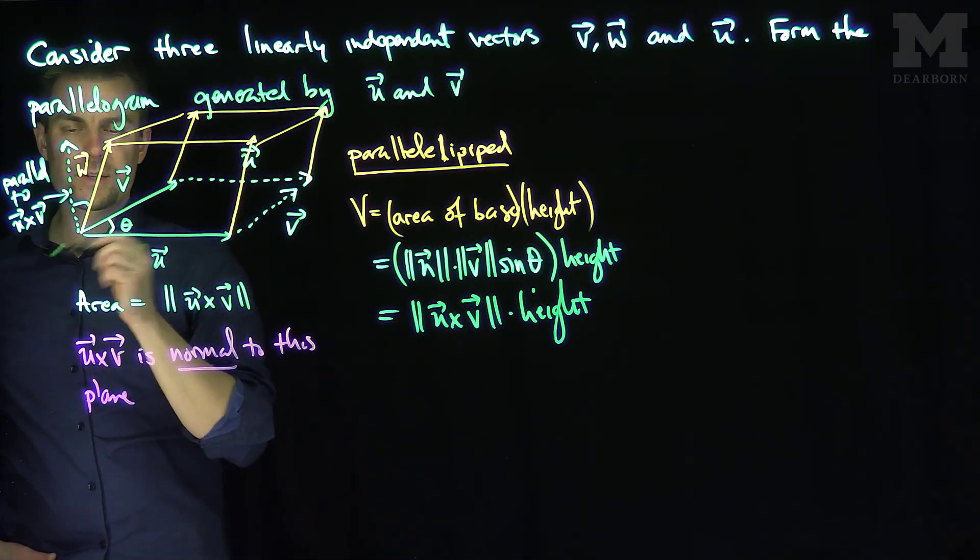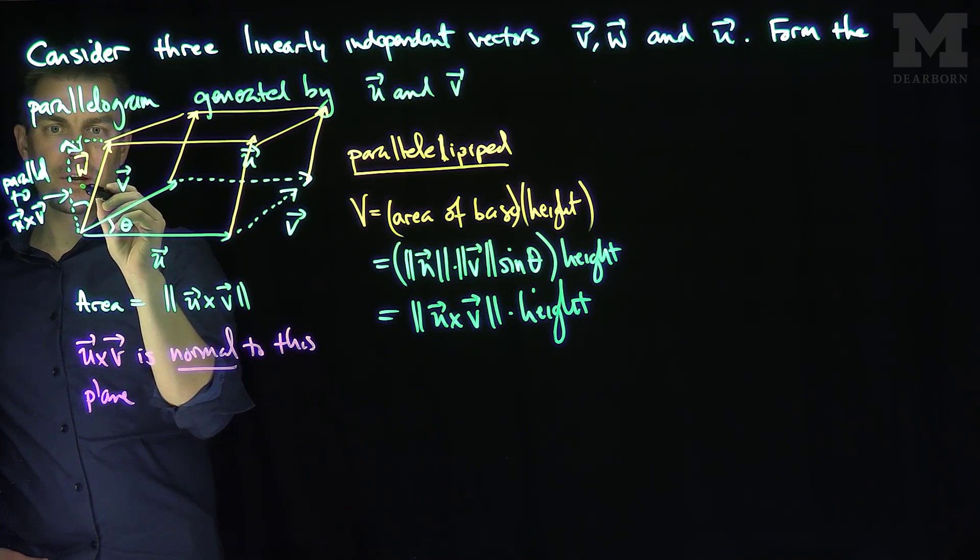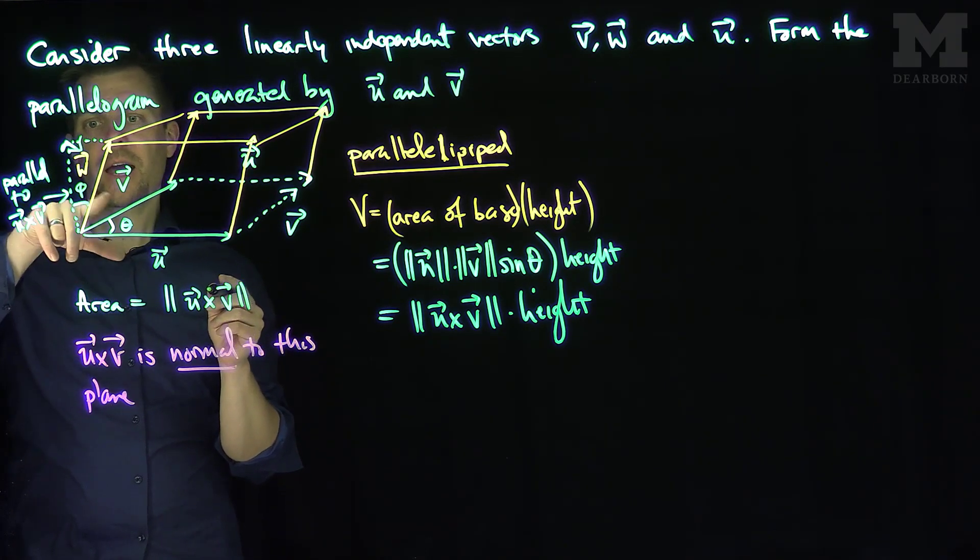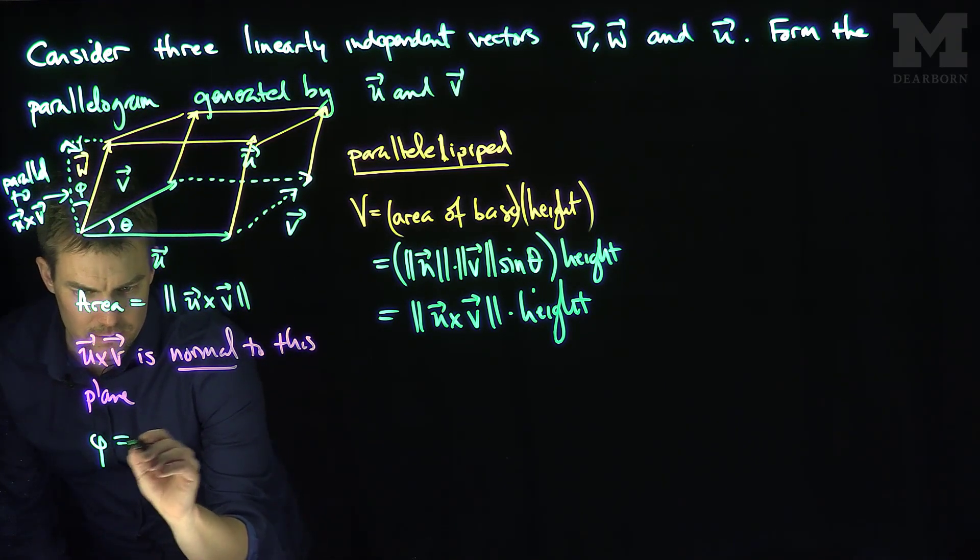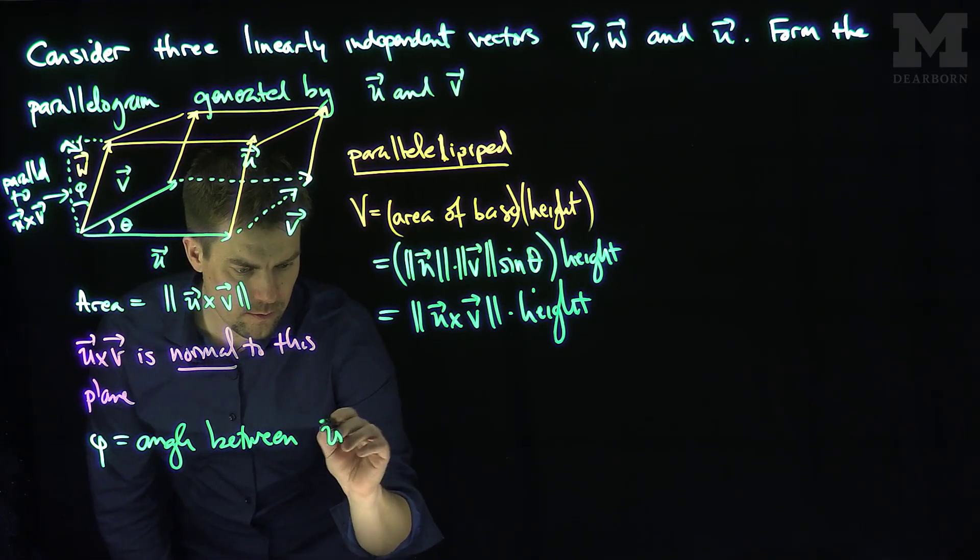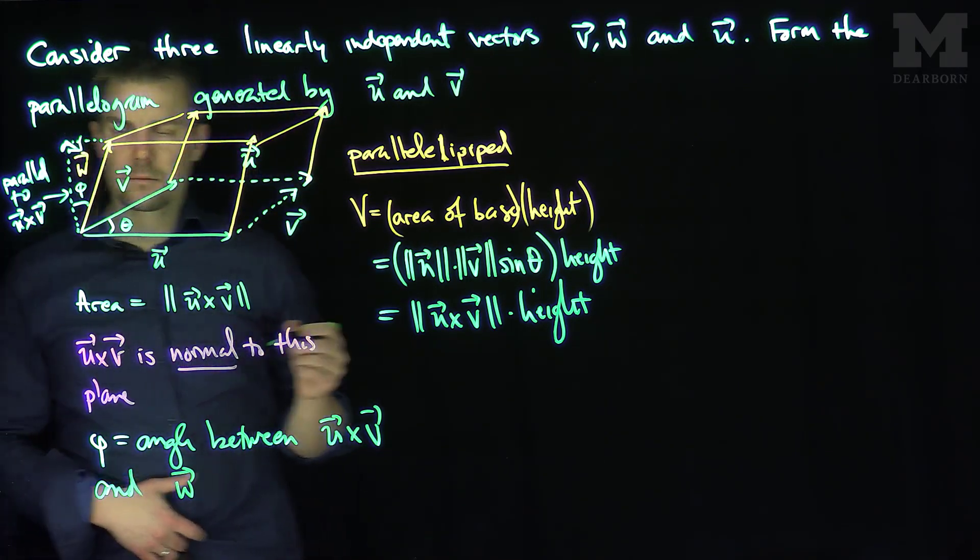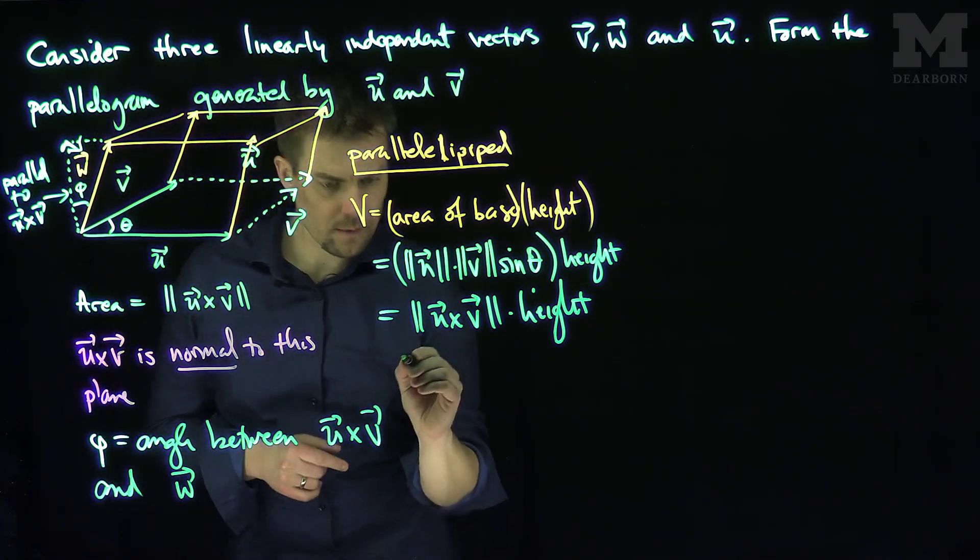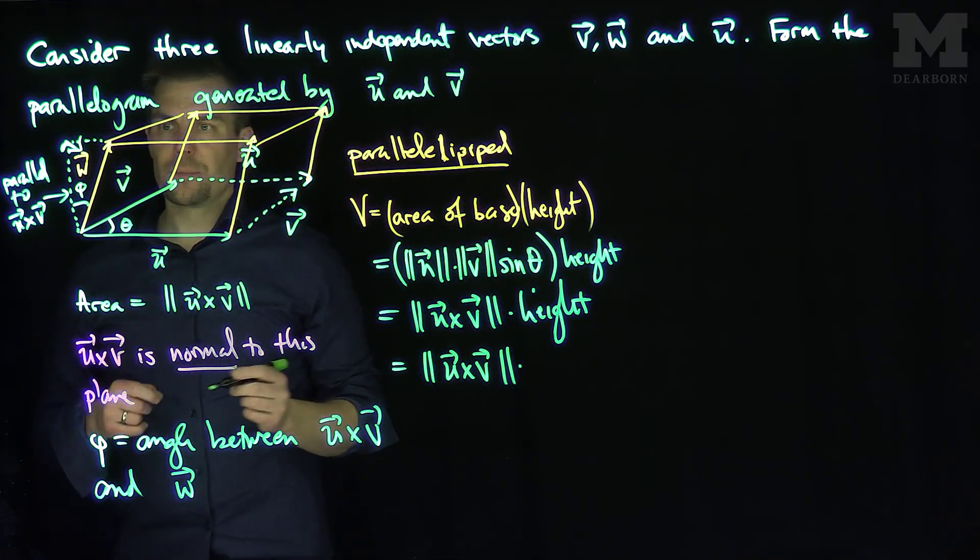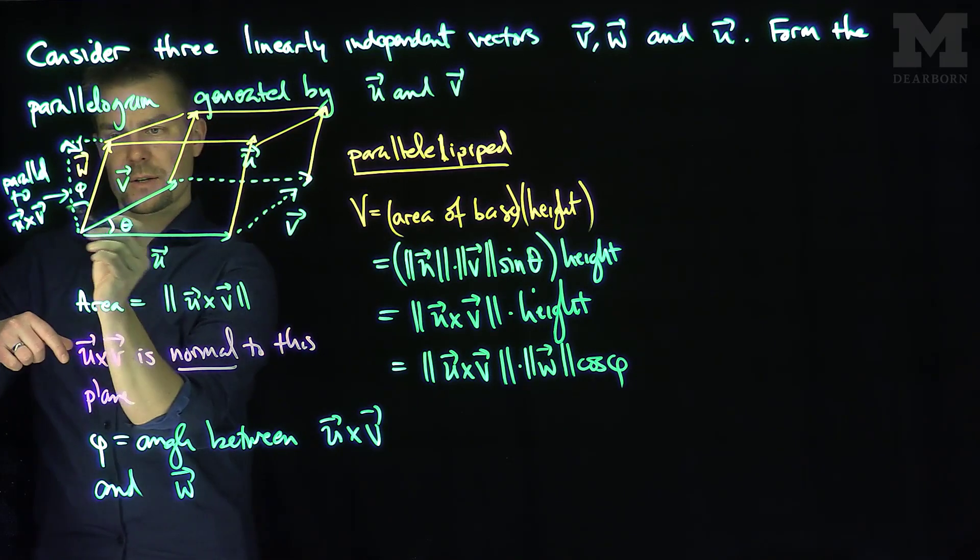So either one of those representations works. Now, what we can do is say, well, what is this height over here? Well, if w is this hypotenuse over here of this triangle, and this angle over here, let's call that angle phi, phi is the angle between u cross v and w. Then this height over here is going to be the length of w times the cosine of phi, because it's the adjacent angle.